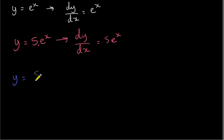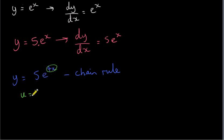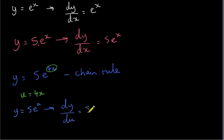Now suppose we have y equals 5 times e to the power of 4x. What do we do in this situation? We use the chain rule. What we do is we let u equal 4x. That means we can write y as 5e to the power of u. So now we have y as a function of u. We can easily differentiate y with respect to u: dy/du is just 5e to the power of u, because if we differentiate e to the power of u with respect to u we get it back, and the 5 is just a constant in front.